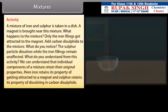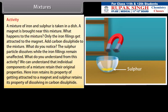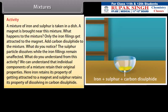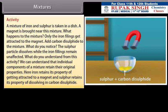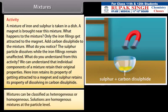Activity: A mixture of iron and sulfur is taken in a dish. A magnet is brought near this mixture. Only the iron fillings get attracted to the magnet. Add carbon disulfide to the mixture — the sulfur particles dissolve while the iron fillings remain unaffected. From this activity, we can understand that individual components of a mixture retain their original properties. Iron retains its property of getting attracted to a magnet, and sulfur retains its property of dissolving in carbon disulfide.